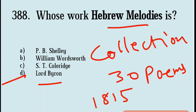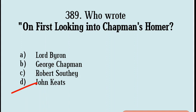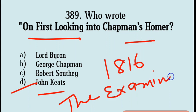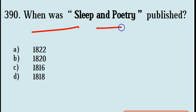Next question: Who wrote 'On First Looking into Chapman's Homer'? Options are Lord Byron, George Chapman, Robert Southey, John Keats. Correct answer: Option D, John Keats. It is a sonnet written by John Keats and published in 1816, first published in The Examiner.